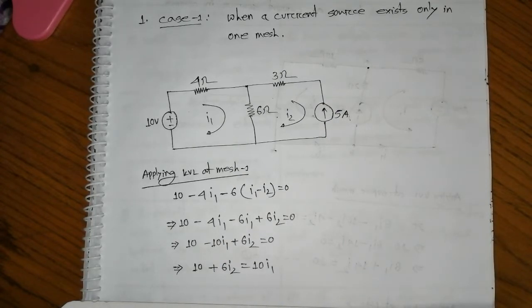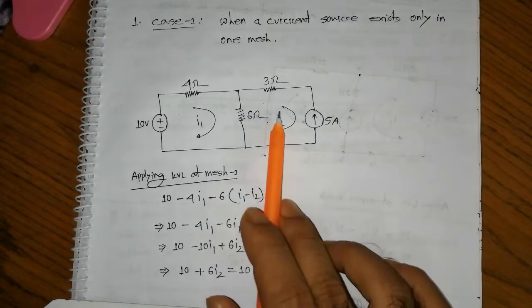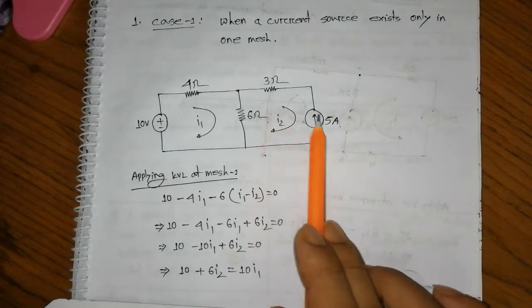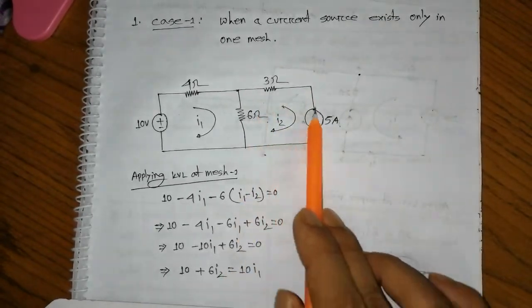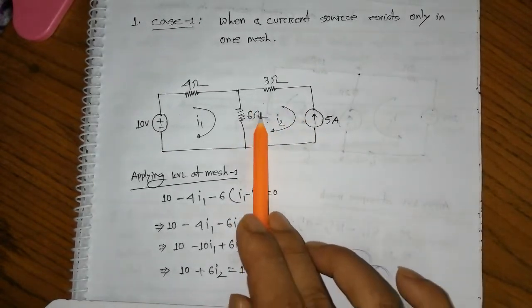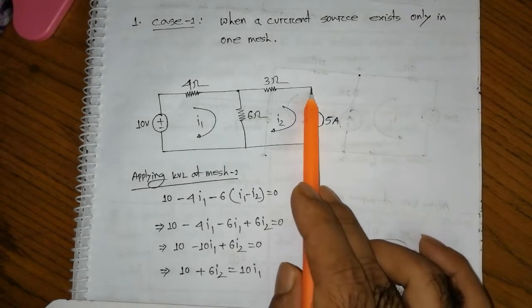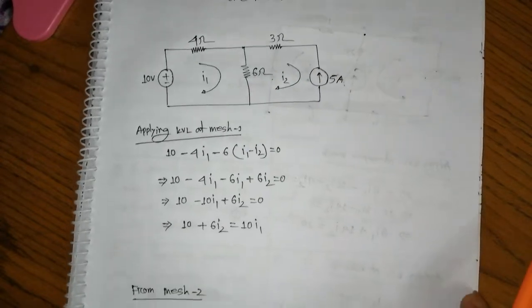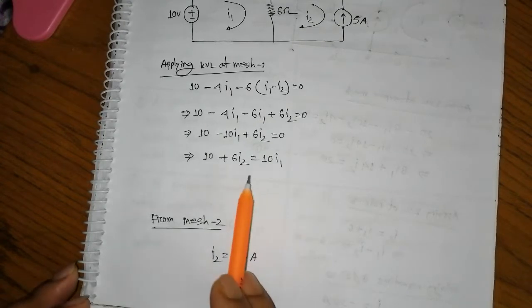I1 and I2 — how can I apply the constraint? I2: the current source of 5A flows anti-clockwise. Our assumed current direction for i2 is clockwise. Since the current source pushes current in the opposite direction, we can say i2 equals minus 5. From mesh 2, i2 equals minus 5.